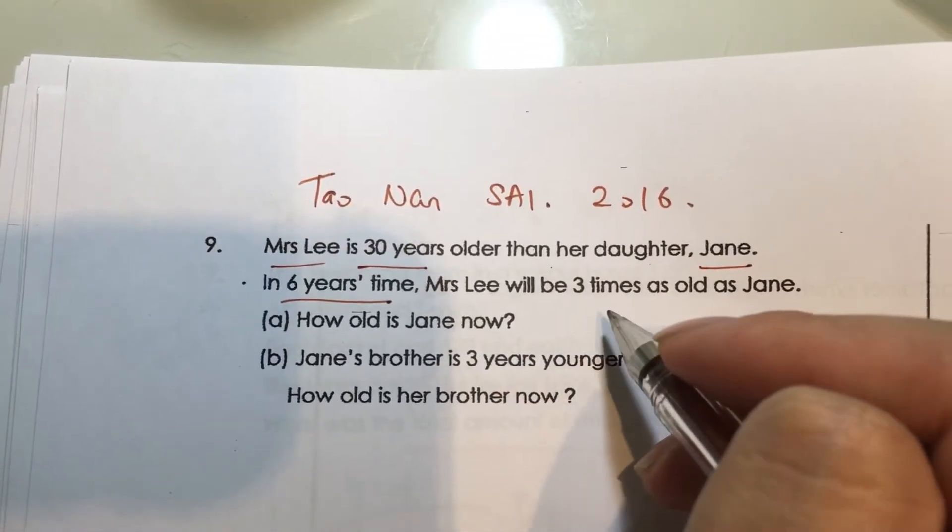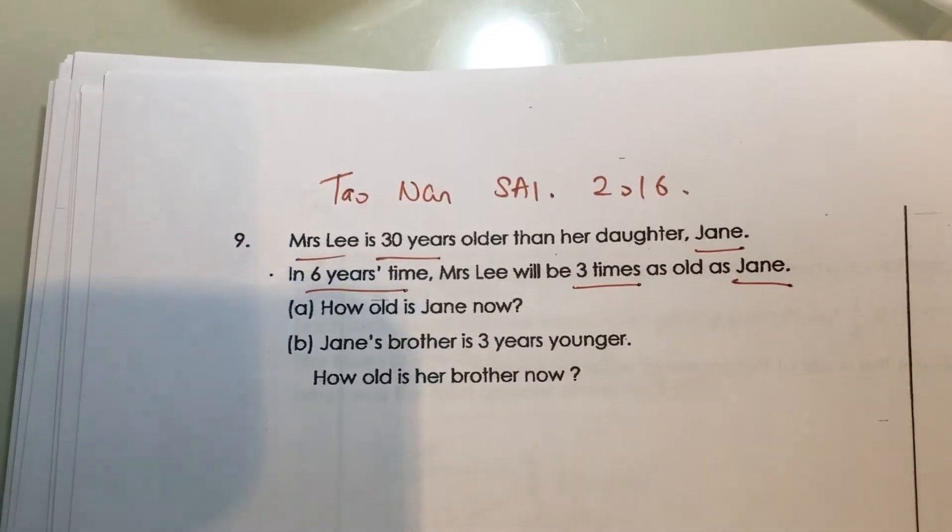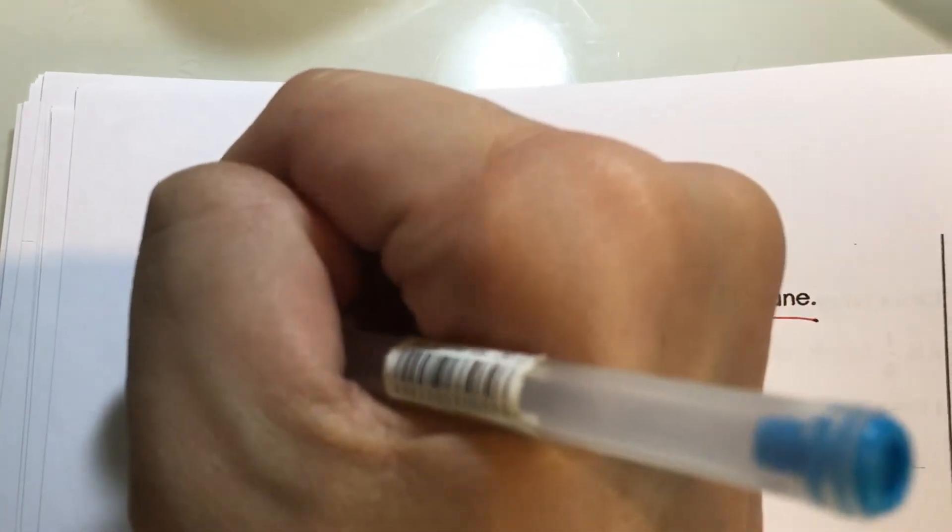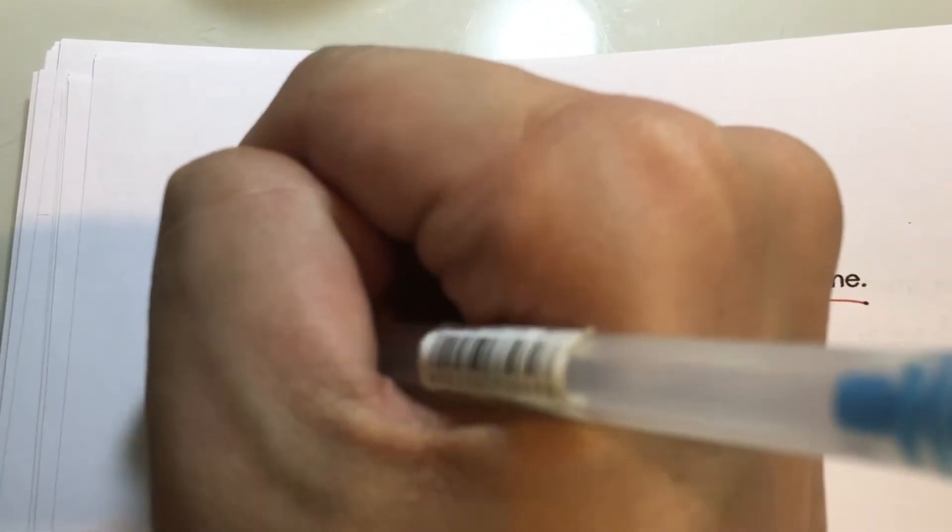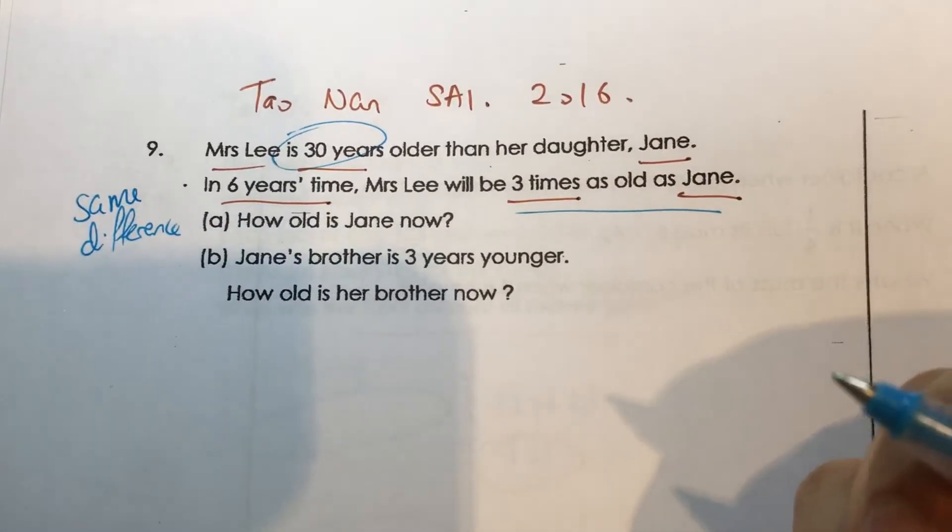In 6 years time, Mrs. Lee will be 3 times as old as Jane. Okay, first thing - you need to know that this is a same difference concept because it's related to age, and that the difference will always be the same, no matter when. Alright.